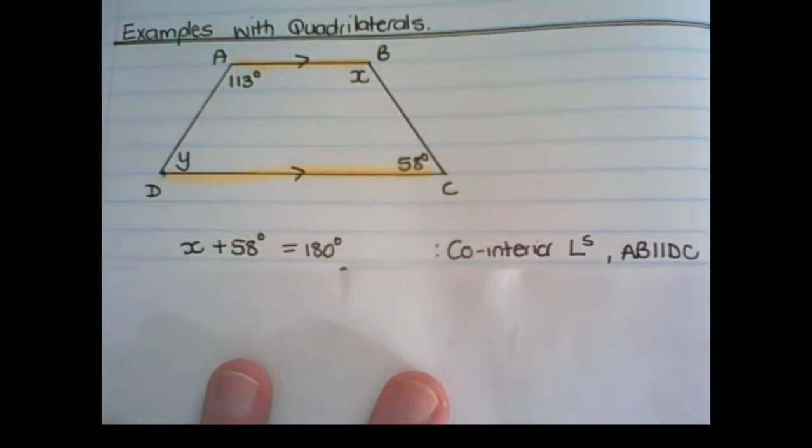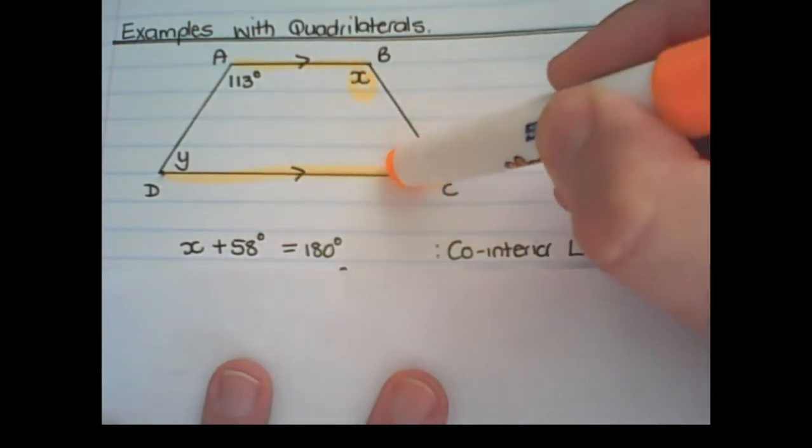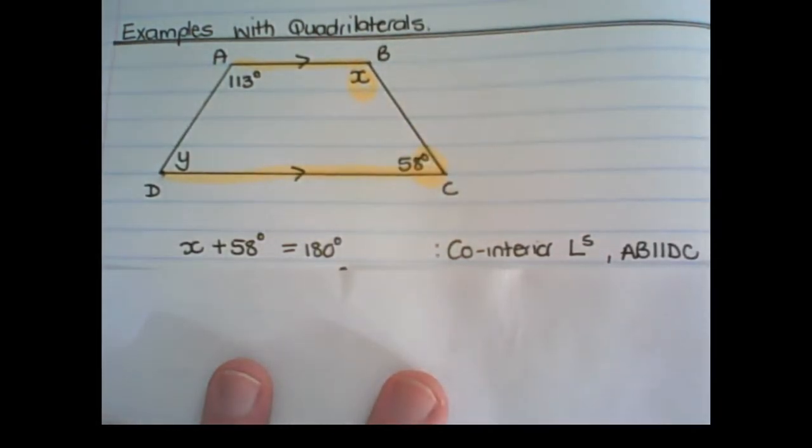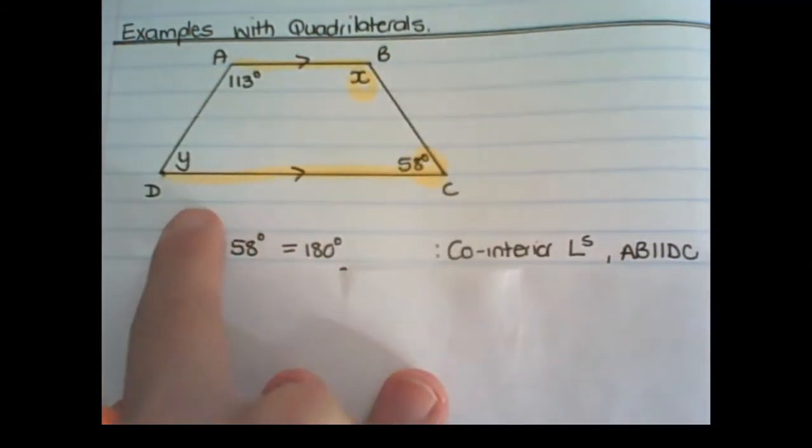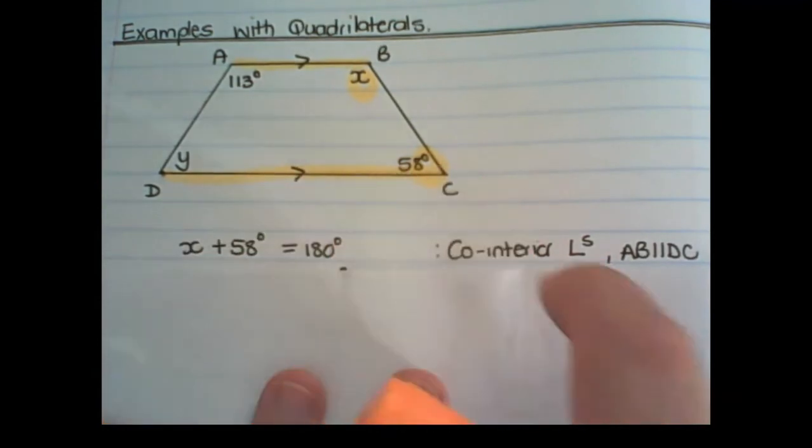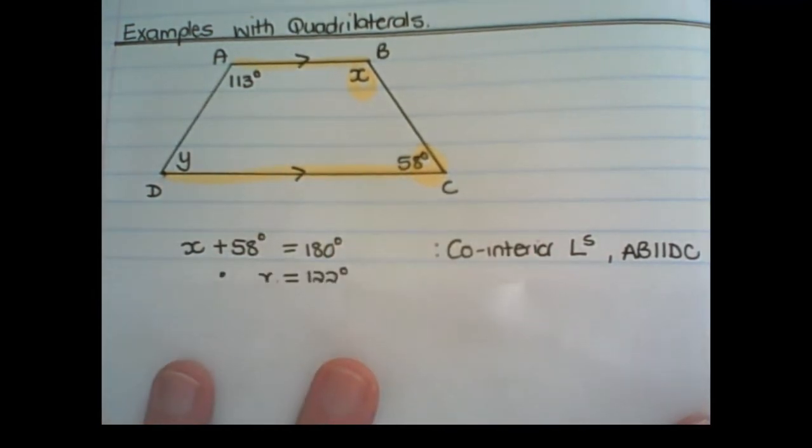First with X. X plus 58 degrees is equal to 180 degrees, and these are called co-interior angles. We can use co-interior because the line AB is parallel to the line DC. And now I simply need to transpose the 58 to find that X is 122 degrees.